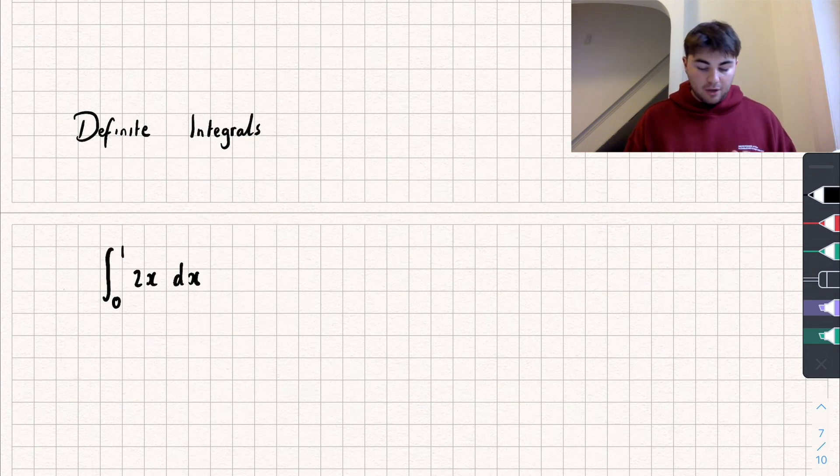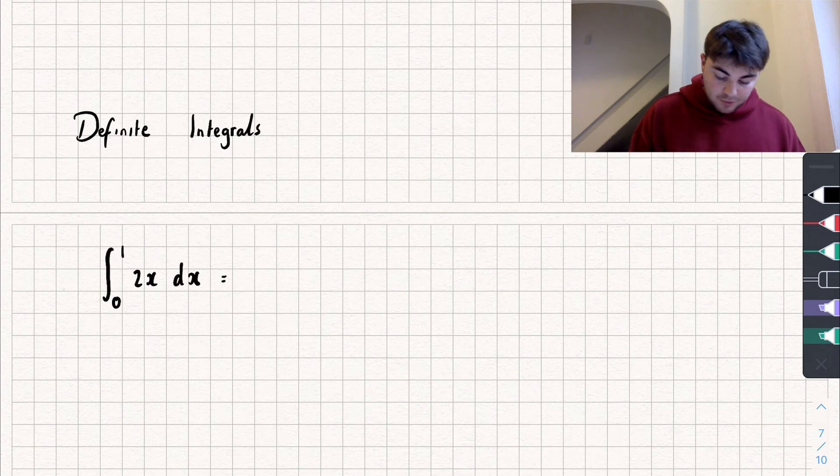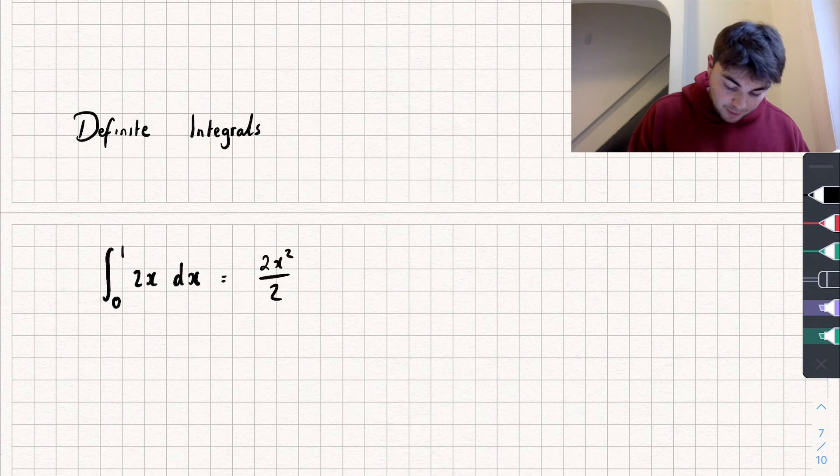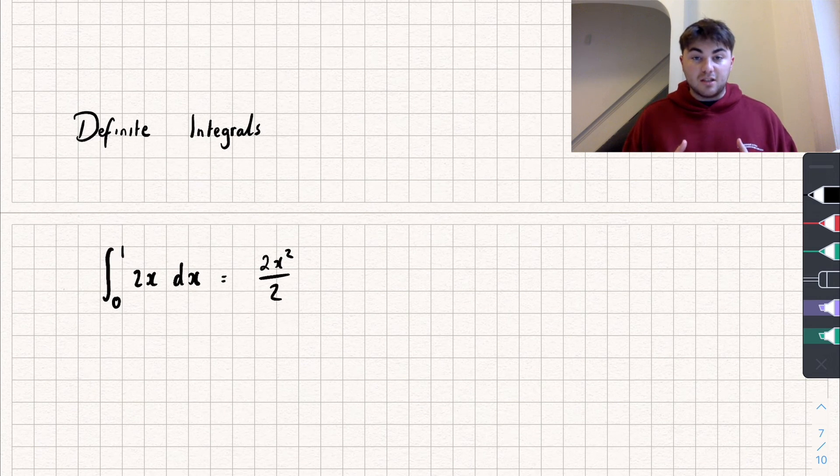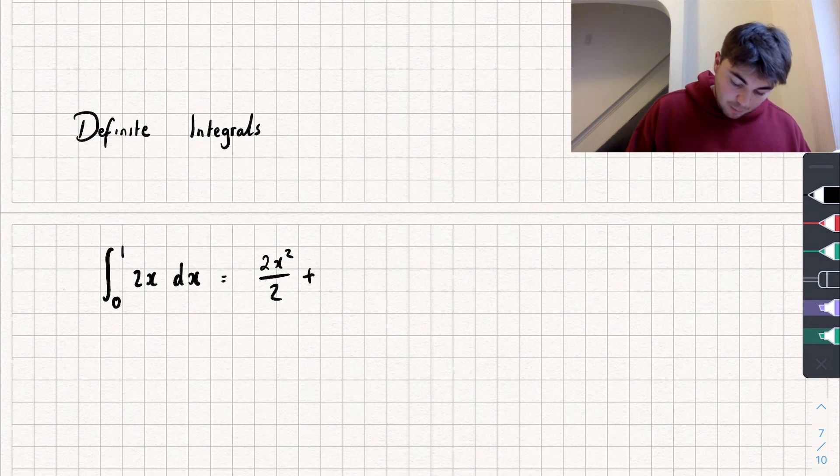So let's see how we can calculate this. We would add 1 to the power and divide by the new power so we're going to get 2x squared and we'd divide that by 2. And just for this example to show you we're going to add in the constant of integration, so let's add in our plus c.